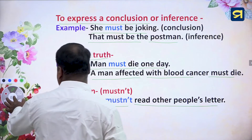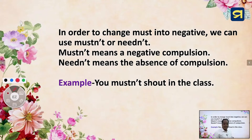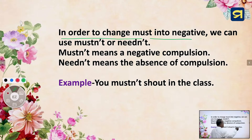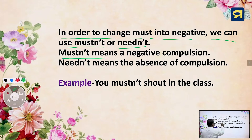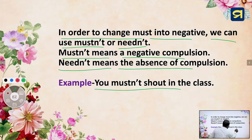To change 'must' into negative, we can use 'must not' or 'need not.' 'Must not' means a negative compulsion, while 'need not' means the absence of a compulsion. For example: 'You must not shout in the class.'